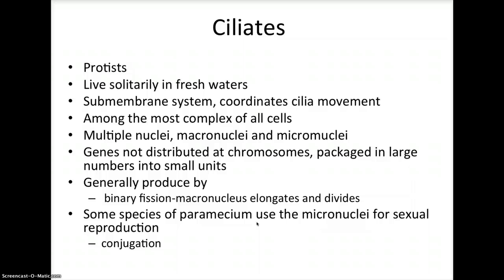However, there are some species of paramecium, a form of ciliate, that have from one to as many as 80 micronuclei. This is required for sexual reproduction, in which the sexual shuffling of genes occurs through conjugation.